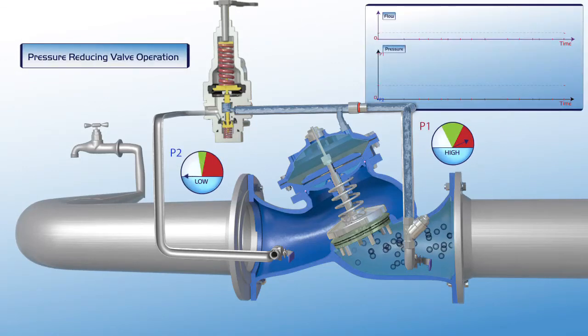At this stage, the pressure reduction valve is closed. The P1 pressure gauge shows that the valve's upstream pressure is high, while the downstream P2 pressure gauge indicates that the consumer supply line is empty.